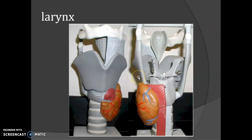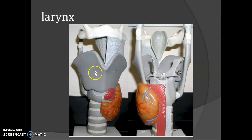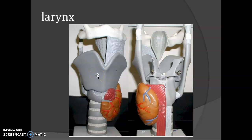Then we have the larynx, also known as the voice box because of the function of the vocal cords located within it. It is a cartilaginous, box-like organ that connects the laryngopharynx with the trachea. We have several cartilages, and the big one in front is the thyroid cartilage, which forms the anterior wall. The prominence formed by this cartilage is larger in males because of the influence of testosterone, and it's commonly called the Adam's apple.